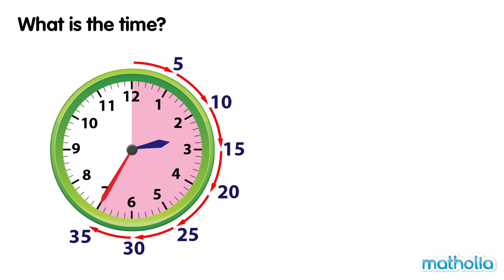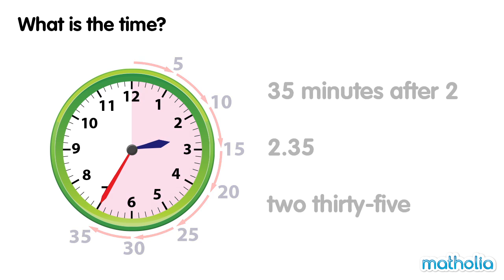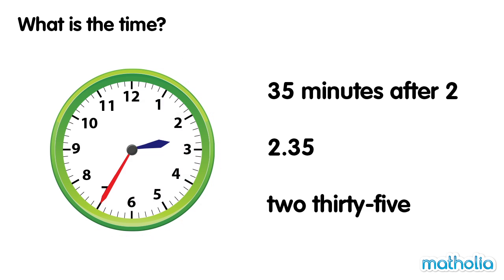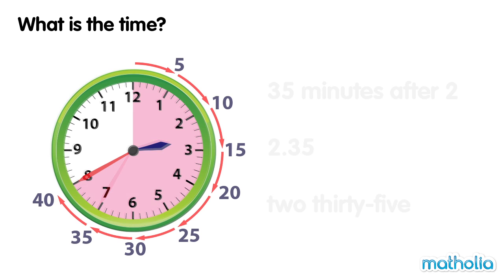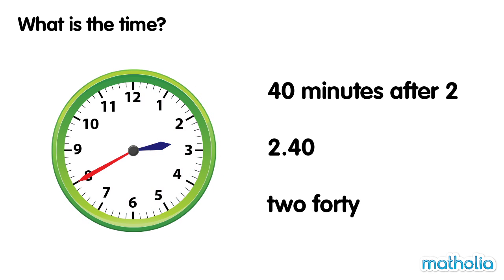Thirty-five minutes after two. It's two thirty-five. Forty minutes have passed. What's the time? Forty minutes after two. It's 2:40.